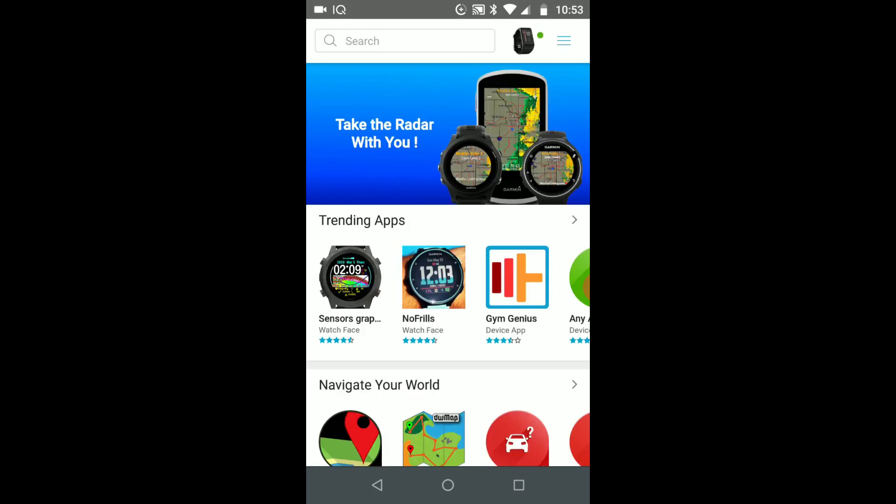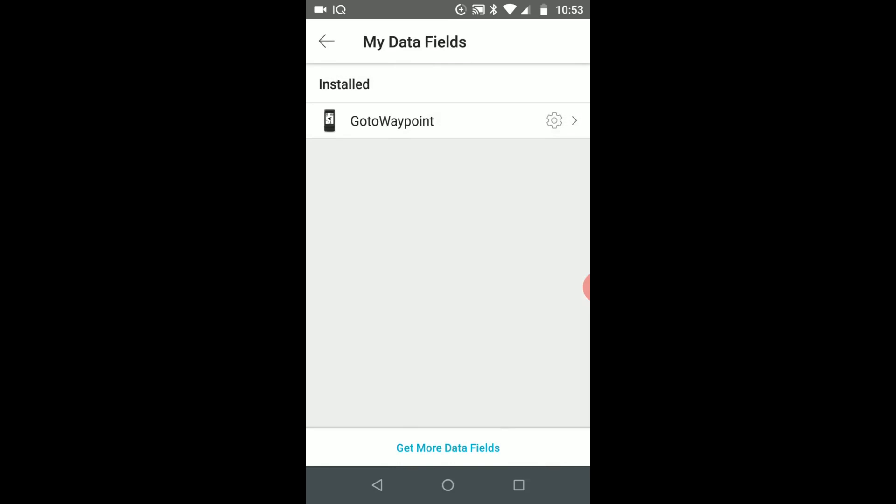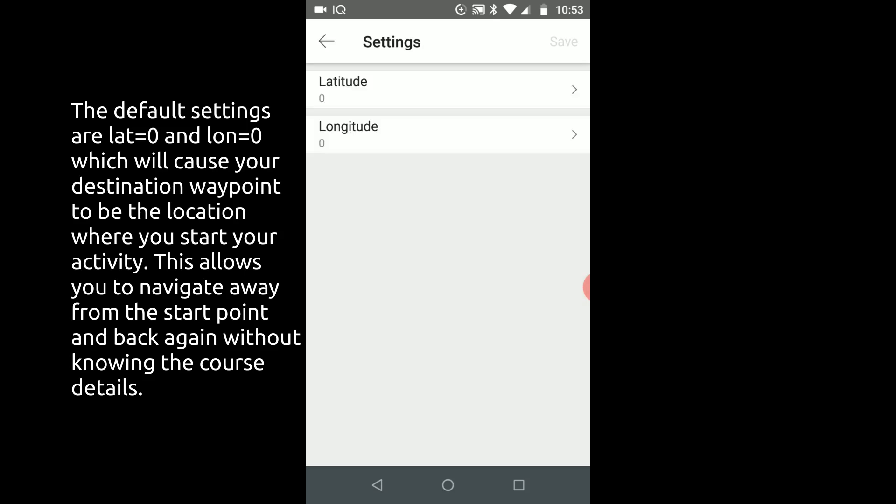Now you can look at your device and you can see that there are settings for this app. So go down to the data fields and you'll see Go to Waypoint there, and then there's the little gear for the settings. When you open these the defaults will be zero. This is because you can either use it in two modes: the default zero mode or setting up a specific waypoint.